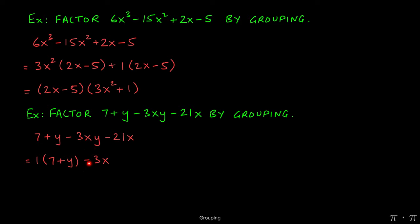So instead of spending our time first factoring out the positive, recognizing that the binomials don't match, we can just factor out the negative if that works better. So if we factor out the negative 3x, negative 3xy divided by negative 3x gives us positive y, and negative 21x divided by negative 3x gives us positive 7.